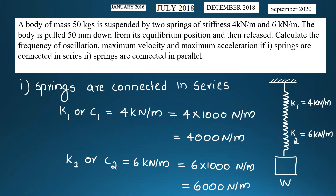Problem three: a body of mass 50 kg is suspended by two springs of stiffness 4 kilo Newton per meter and 6 kilo Newton per meter. The body is pulled 50 mm down from its equilibrium position and then released. Calculate the frequency of oscillation, maximum velocity, and maximum acceleration when the springs are connected in series, and then when connected in parallel.